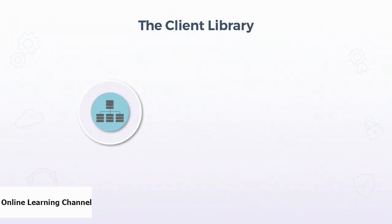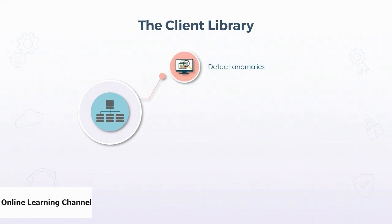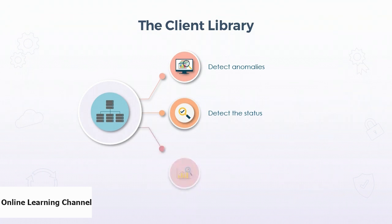The client library is also available for building your own apps in C# using the .NET Core framework, or JavaScript through Node.js, or in Python 3 with the pandas data analysis library. The client library allows your apps to detect anomalies in the data either in real time or as a batch deposit. It can detect the status of the most recent data points to determine if there are any anomalies, and it can detect trend changes within the data set, highlighting points in time when the trends started to emerge.